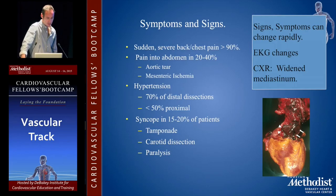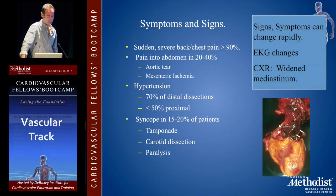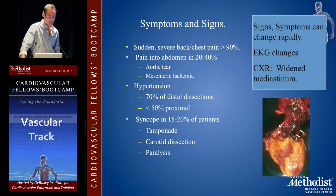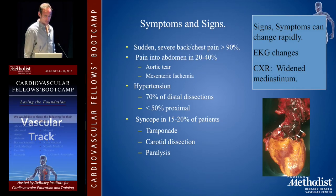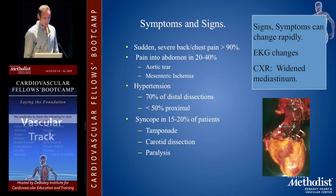Symptoms and signs include sudden severe back or chest pain in 90% of patients. Abdominal pain can occur in 20-40% of patients — don't get fooled by that — it can be part of the aortic tear or mesenteric ischemia, though mesenteric ischemia doesn't have to be present with abdominal pain. Hypertension is present in 70% of distal dissections and less than 50% of proximal dissections. Syncope occurs in 15-20% of patients, which could be from tamponade or carotid dissection, and paralysis is also possible.